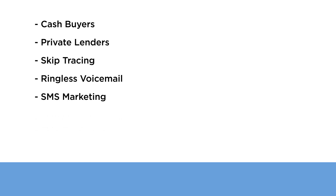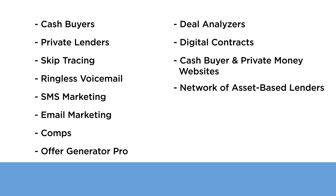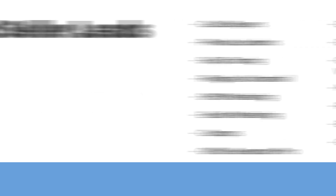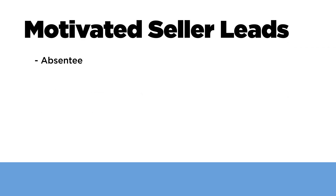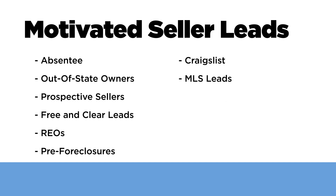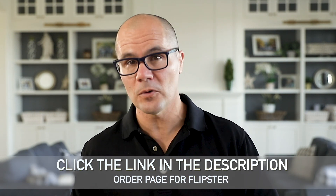Click the button below now. And remember, you get cash buyers, private lenders, skip tracing, ringless voicemail, SMS marketing, email marketing, comps, Offer Generator Pro, deal analyzers, digital contracts, cash buyer and private money websites, a network of asset-based lenders, and tools for rehabbing houses including Rehab Estimator, Budget Tracker, and Contractor Management Platform, and motivated seller leads including absentee and out-of-state owners, prospective sellers, free and clear leads, REOs, pre-foreclosures, Craigslist and MLS leads, for sale by owners, and in some areas probate, divorce, and bankruptcy leads. Plus a property workflow that walks you through every step of your deal with training videos, scripts, and templates.